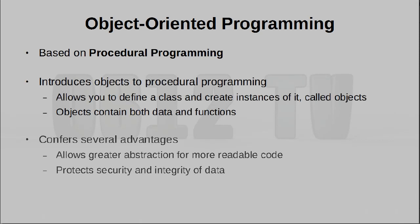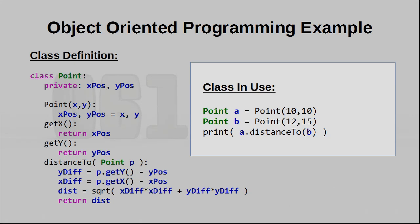We can improve on procedural programming by using what is called object-oriented programming. Object-oriented programming makes code even easier to understand by introducing the idea of objects. Ultimately it is just syntactic sugar — still just an abstraction for jumping around and things like arrays. Objects can hold both information as well as methods that operate on that information. Objects can even be extended; you can create objects based on other objects and tweak them slightly. Languages that place emphasis on object-oriented programming include Java and C++.